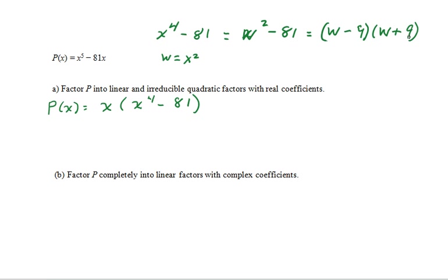But now, we back substitute the x squared for w and we see that we get a factor of x squared minus 9, which is the difference of 2 squares. So we can factor that into x minus 3 times x plus 3.